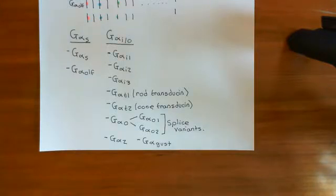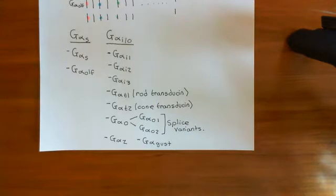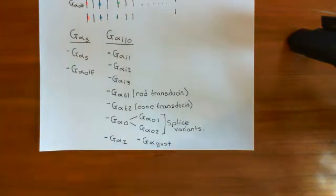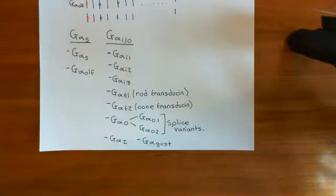I want to stress that every single person on this planet will have all 21 of these subunits, unless there's something horrendously wrong. It's not a matter of different alleles for one gene for alpha subunits — there is not just one gene for alpha subunits. There are loads of genes.